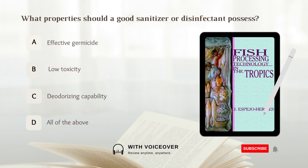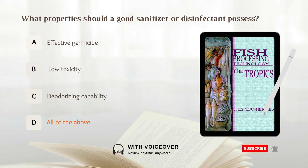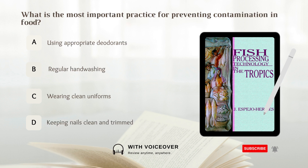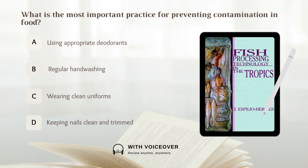What properties should a good sanitizer or disinfectant possess? A. Effective germicide. B. Low toxicity. C. Deodorizing capability. D. All of the above. Answer: D. All of the above. What is the most important practice for preventing contamination in food? A. Using appropriate deodorants. B. Regular hand washing. C. Wearing clean uniforms. D. Keeping nails clean and trimmed. Answer: B. Regular hand washing.